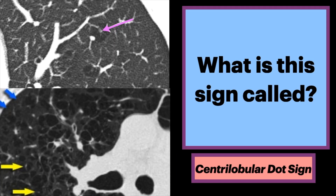Here are other examples. There are focal lucencies measuring up to approximately 1 cm, located centrally within the secondary pulmonary lobule, SPL. The arrows also point at a central dot, representing the central bronchovascular bundle.